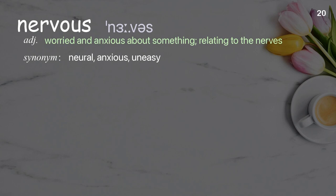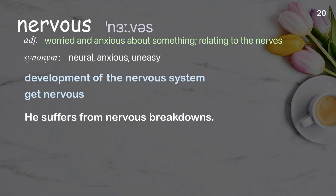Nervous: worried and anxious about something; relating to the nerves. Examples: development of the nervous system, get nervous. He suffers from nervous breakdowns.